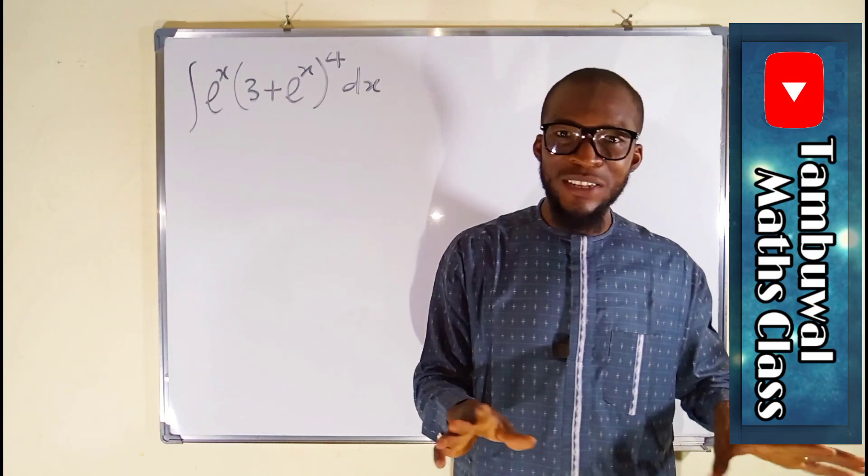Now let us integrate this function with respect to u. The power increases by 1 and we divide by the result, so this becomes u to the power of 5 divided by 5. Then you are free to add your constant of integration.